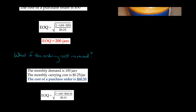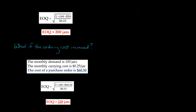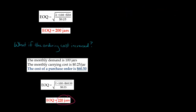We've got the same formula, but now it's $60.50 instead of $50. I'll spare you the calculation — that gets us to 220 jars. Now think about the intuition here. We went from the proper order quantity being 200 jars, but it went up to 220 jars — the amount we should order actually increased.